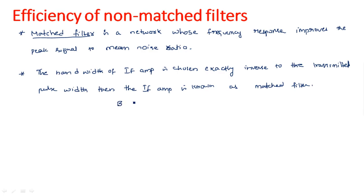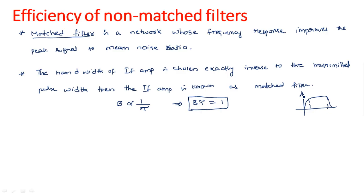The matched filter condition means bandwidth is inversely proportional to 1/τ (tau), or equivalently, bandwidth times tau equals 1. In the frequency domain we refer to bandwidth, and in the time domain tau is the pulse width. If we choose the filter bandwidth to be exactly the reciprocal of the transmitted pulse width, that filter is a matched filter.